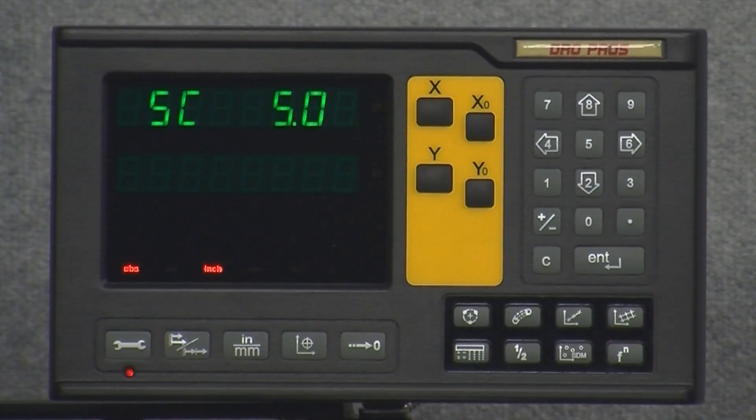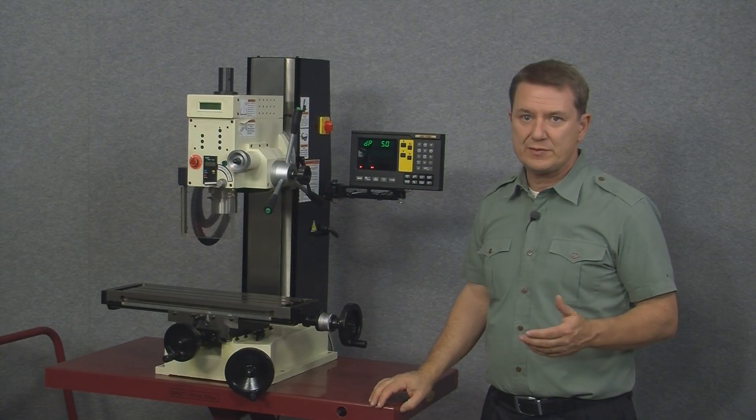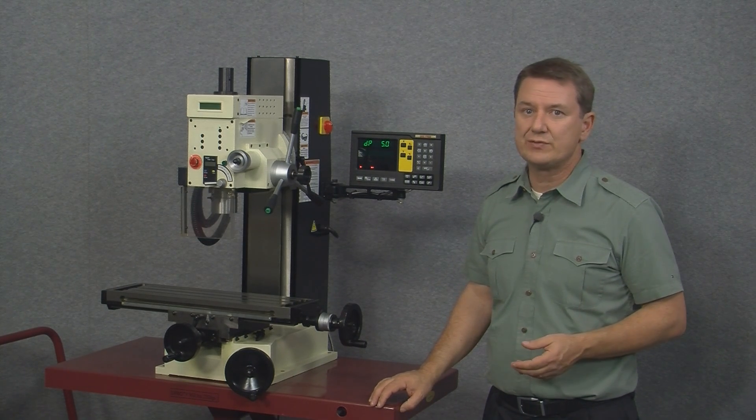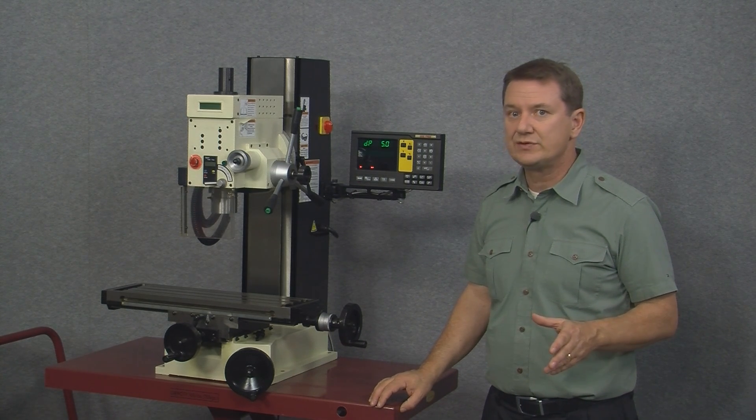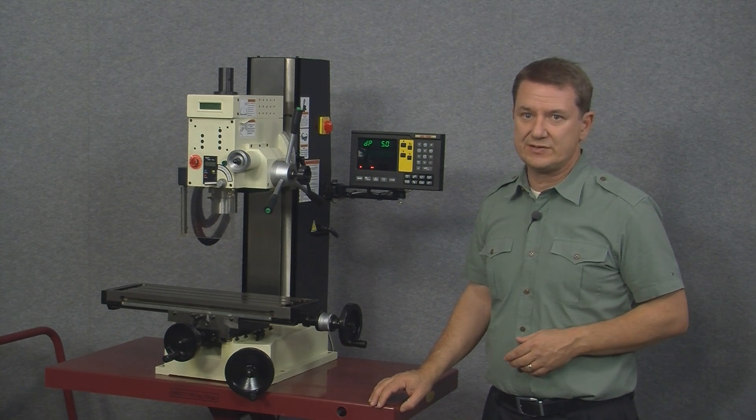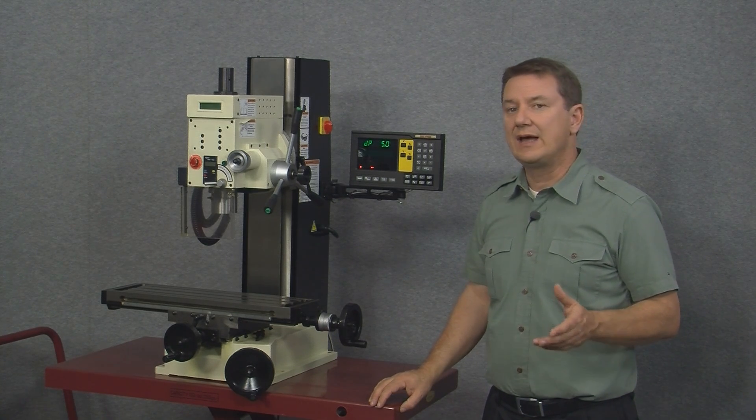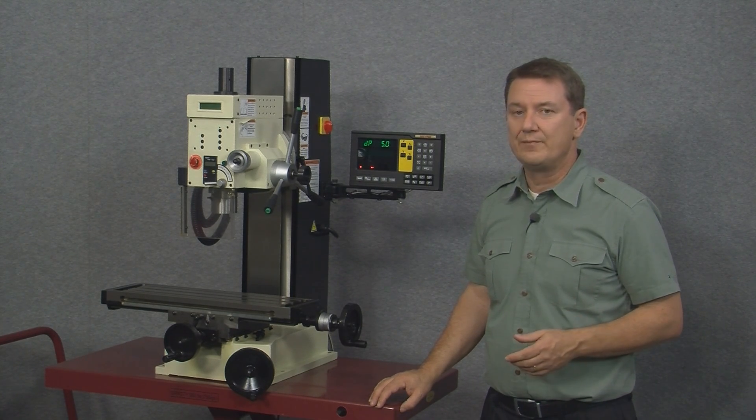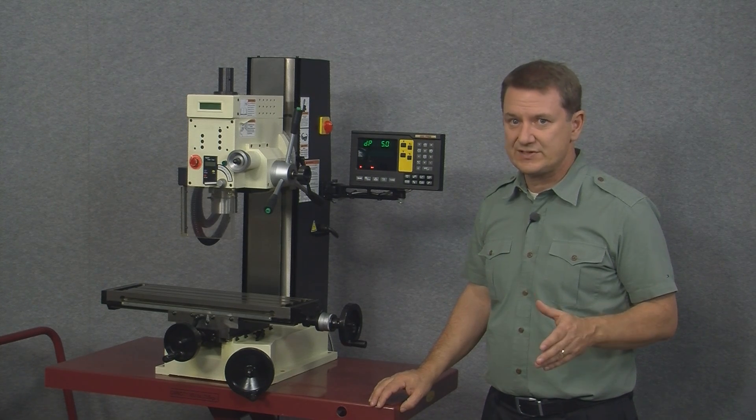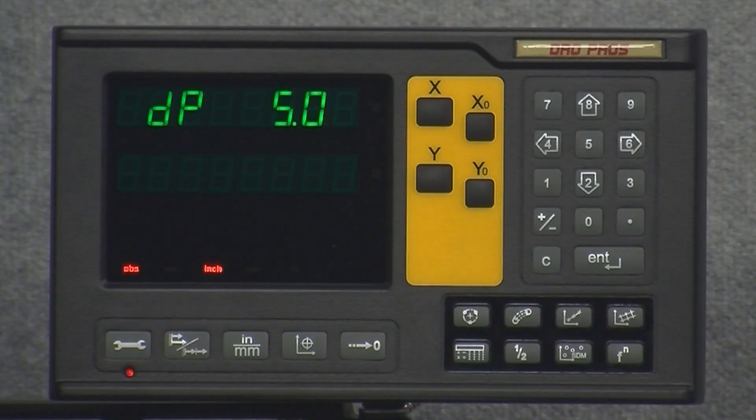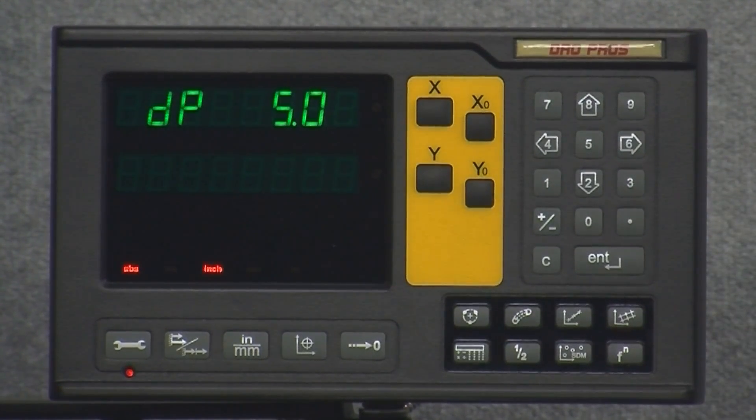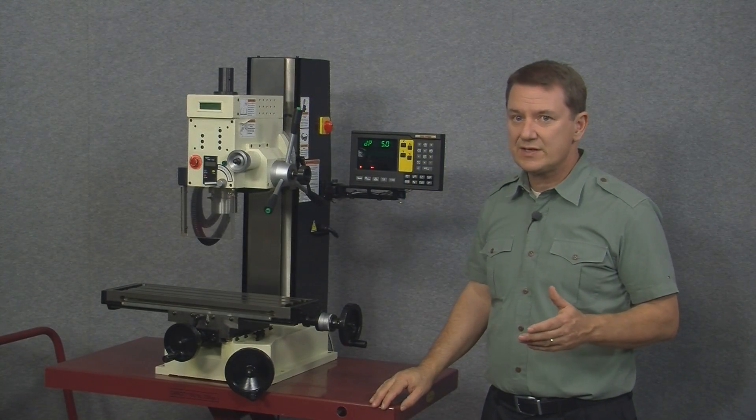So let's arrow down. And next, we see DP 5.0. Now, this setting represents the display resolution. And this setting is user selectable and can be changed to whatever suits you best, as long as it's equal to or greater than the resolution of the scales you have. Let's go ahead and take a look. Again, the default is 5.0 or 5 microns, just like before. And this option also has more than just two settings. And if we arrow left or right, we can again scroll through all of the different choices.